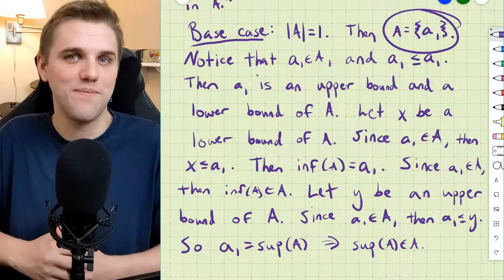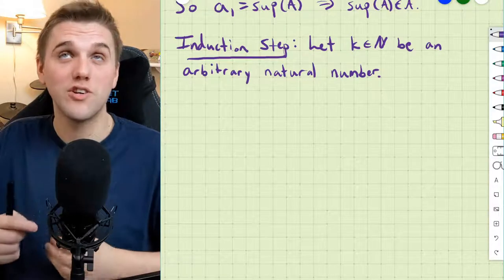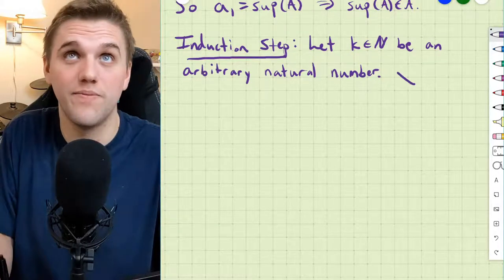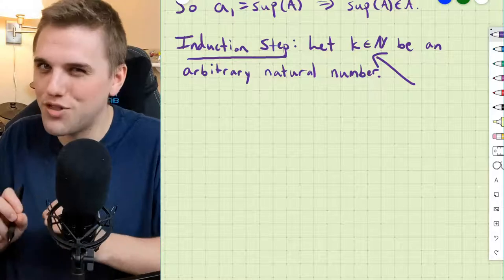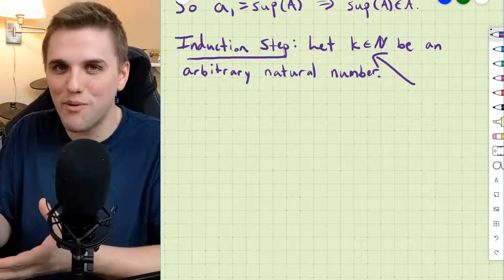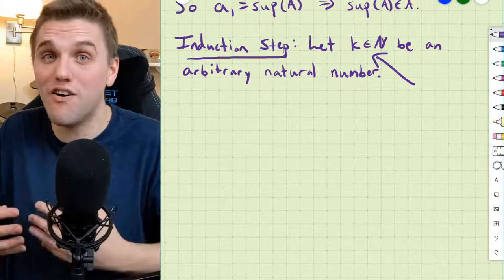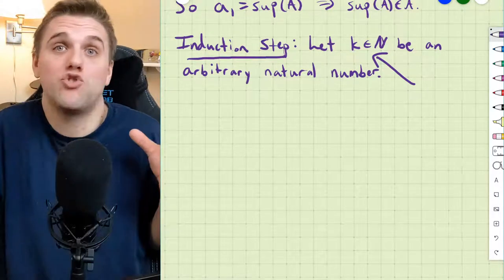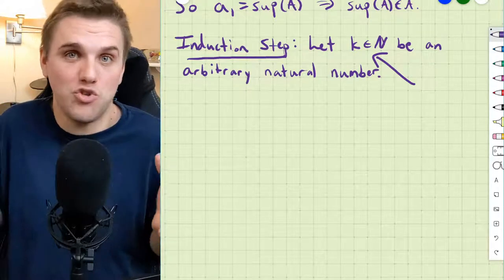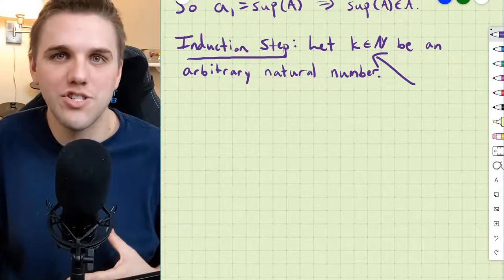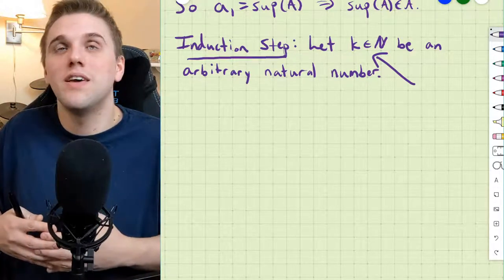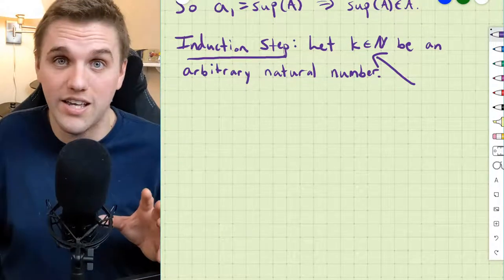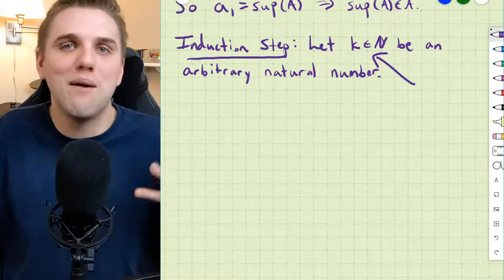For the inductive step, we're going to let K be a fixed arbitrary natural number — K is a constant, not a variable. It could be any natural number: 10, 100, who knows — it's arbitrary. We're going to prove that if P(K) is true, then P(K+1) is true, regardless of what K is. That's the goal: P(K) implies P(K+1).